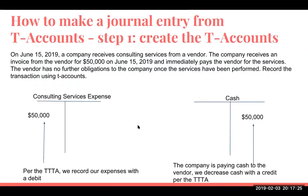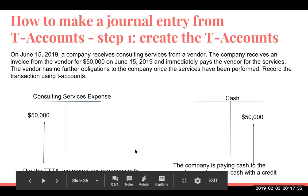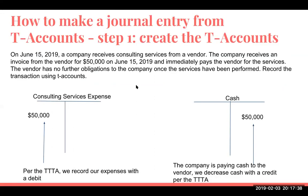So how do we get to proper form using T-accounts? I want to go back to a question from one of my prior videos: on June 15, 2019, a company receives consulting services from a vendor. The company receives an invoice for $50,000 and immediately pays the vendor. The vendor has no further obligations once performed. We're going to record the transaction using T-accounts. We're paying the vendor $50,000 cash — cash is an asset, increased with debits and decreased with credits. So here, we're paying cash of $50,000.